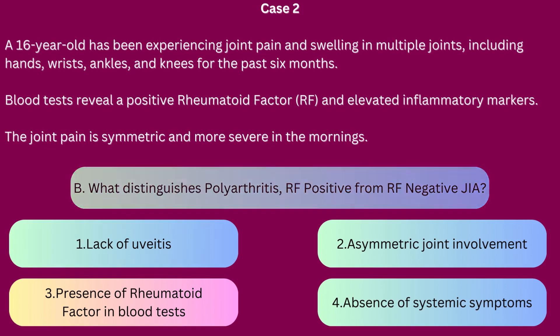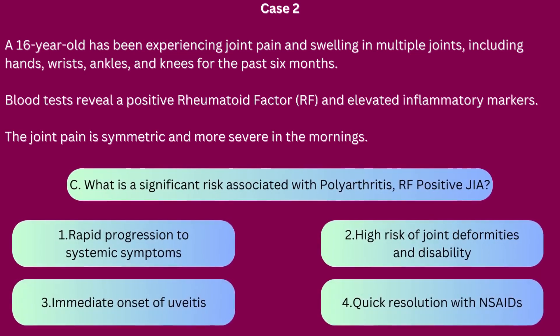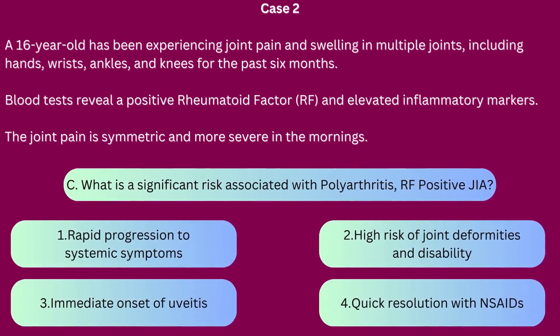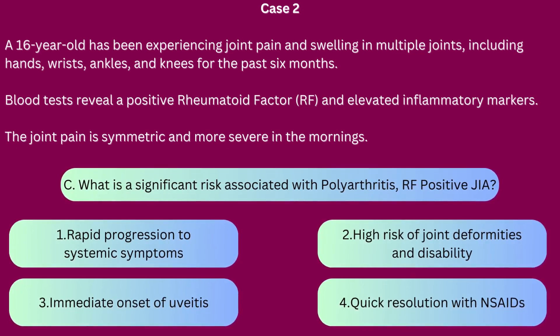Question C: What is the significant risk associated with polyarthritis rheumatoid factor positive juvenile idiopathic arthritis? 1. Rapid progression to systemic symptoms. 2. High risk of joint deformities and disability. 3. Immediate onset of uveitis. 4. Quick resolution with non-steroidal anti-inflammatory drugs.